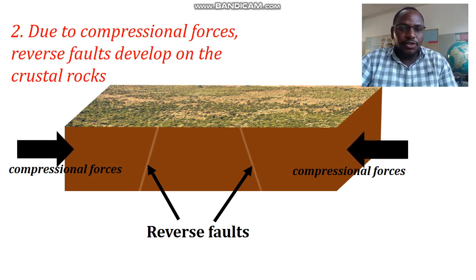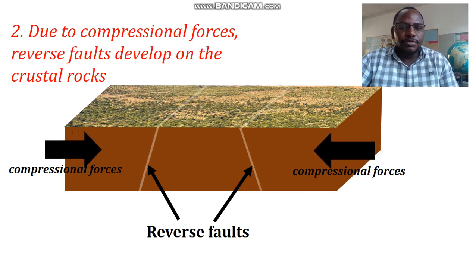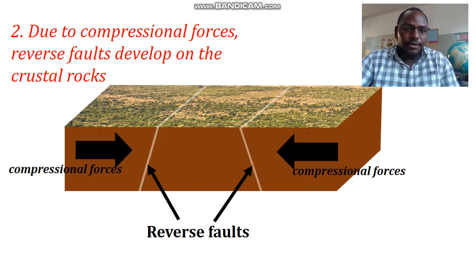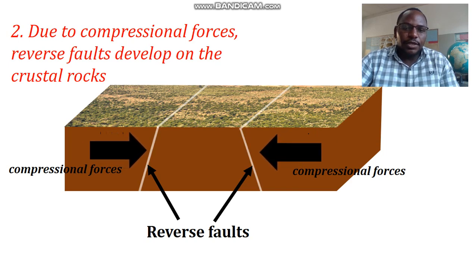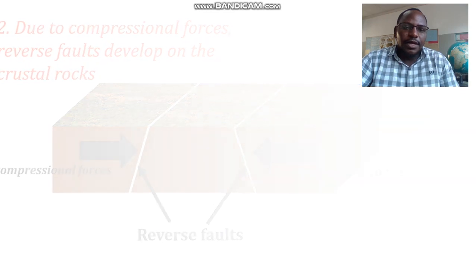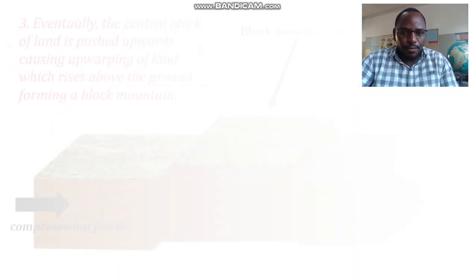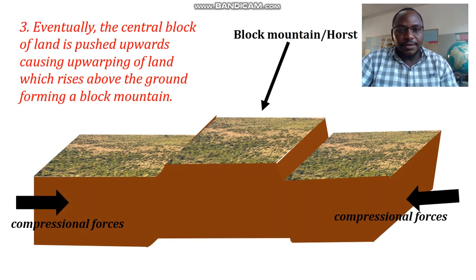The fracturing leads to the formation of fault lines. These are reverse faults which tend to separate the land into sections. Eventually, the middle block of land is forced to move upwards in a process known as upthrusting.